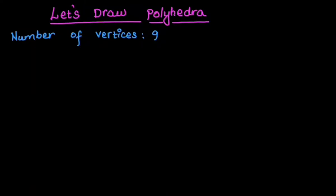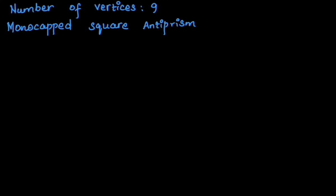Starting with the number of vertices 9, the basic geometry that we have is a monocapped square antiprism. The base polyhedra is a square antiprism.